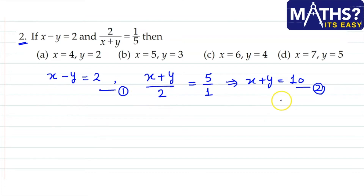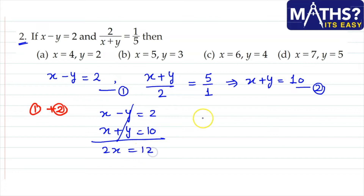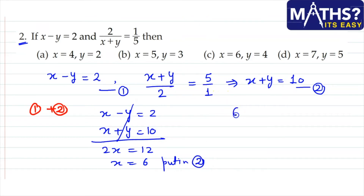Here we have -y and +y. If we add both equations — x - y = 2 and x + y = 10 — then y will cancel out. We get 2x = 12, so x = 6. Substituting x = 6 into the second equation: 6 + y = 10, so y = 4.